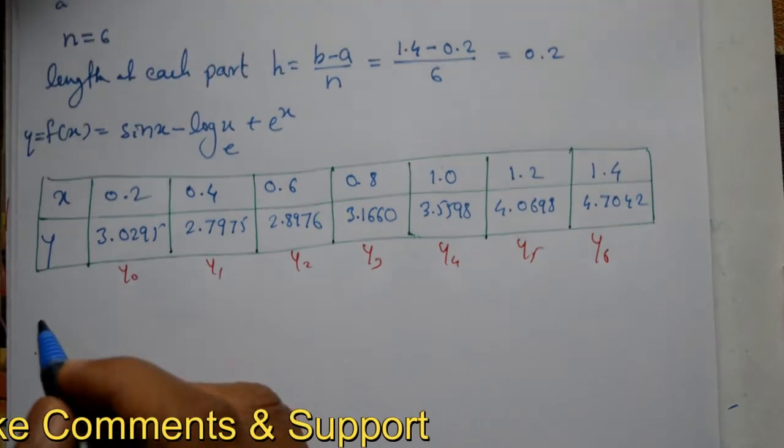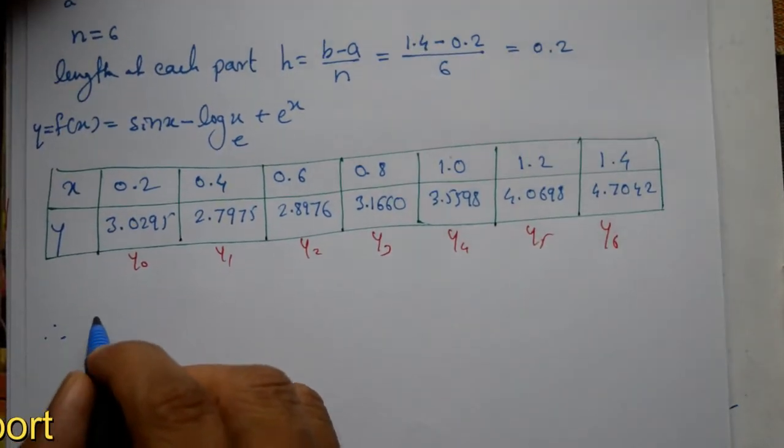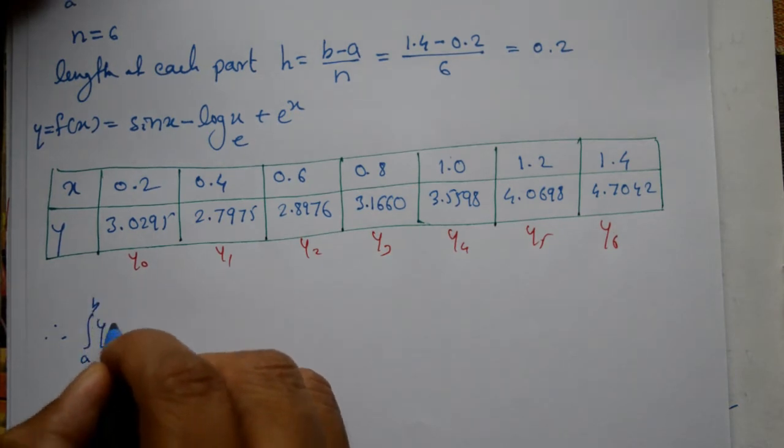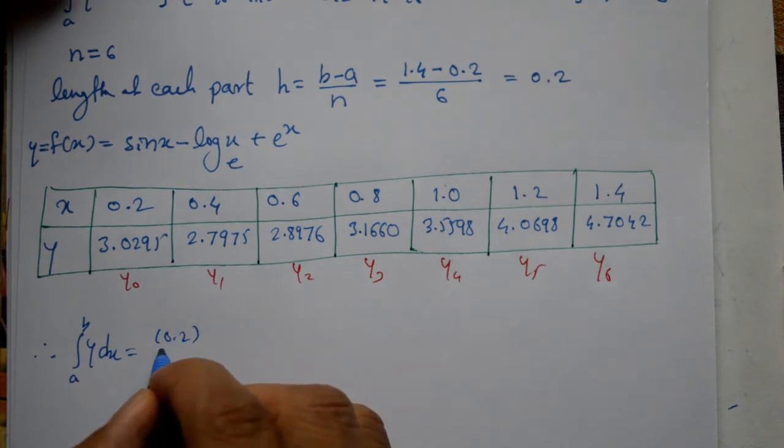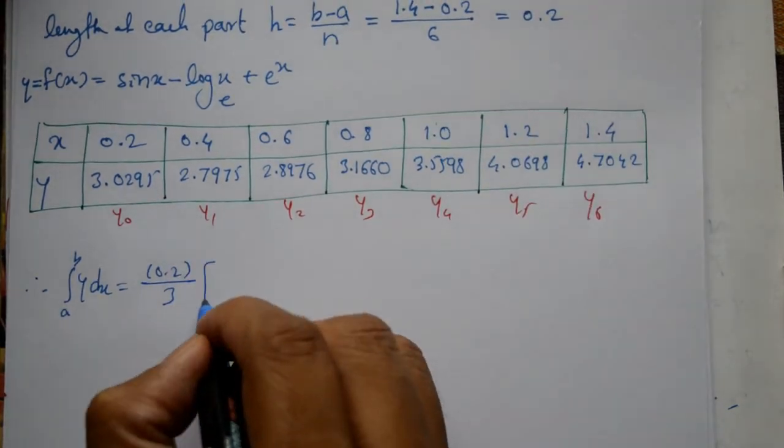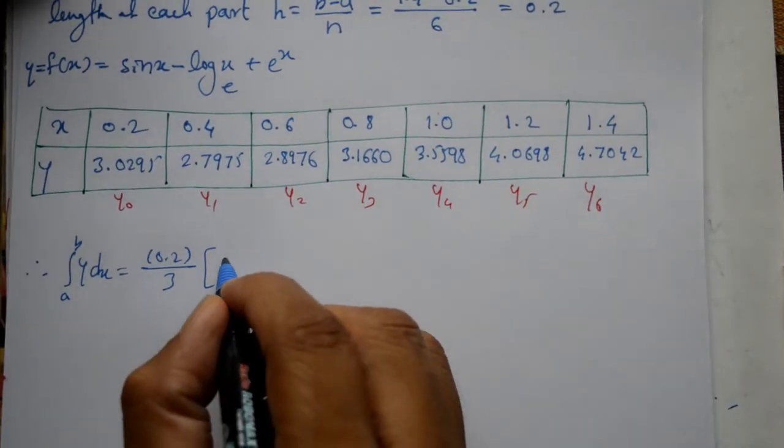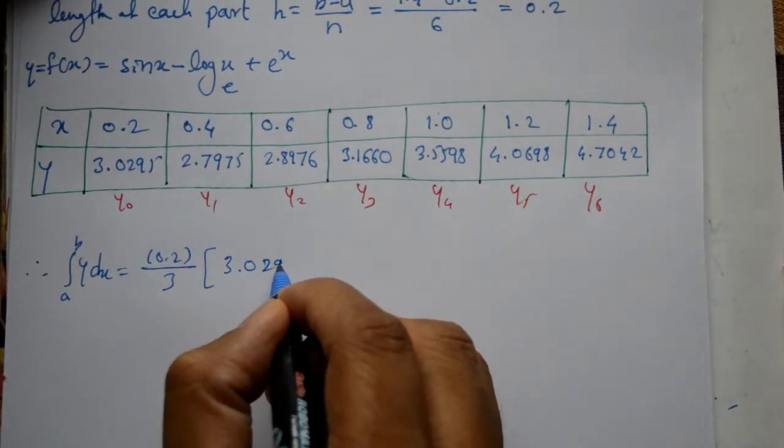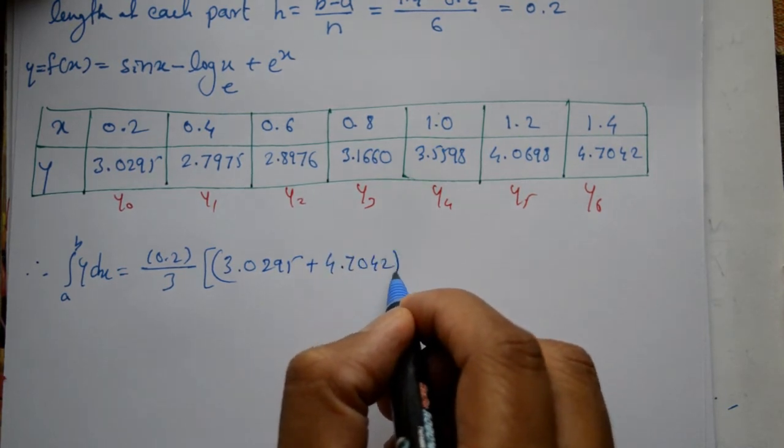Therefore using the formula, integration of a to b y dx equals h by 3, which is 0.2 divided by 3, into: y0 plus yn, the first and last values: 3.0295 plus 4.7042.